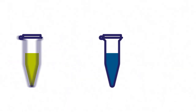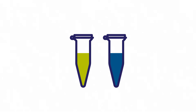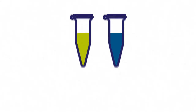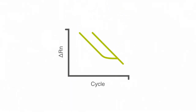You can test for RT bias by reverse transcribing two-fold dilutions of a known amount of RNA, then running a qPCR standard curve for each assay and endogenous control. A standard curve generated from an RNA dilution series incorporates the variability introduced by the reverse transcription step. It should be linear with a target slope of minus 3.323.